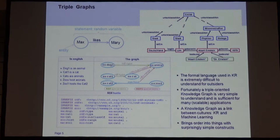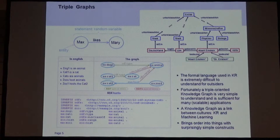A knowledge graph is very simple. An entity is a node — Max and Mary are nodes — and 'likes' is a predicate, a directed link. You should think of a whole statement as being a random variable, maybe a node in a Bayesian network. These two things are in a way dual. On the right side you see a simple example: Albert Einstein is born in 1879, born in Ulm, Ulm is in Germany, Germany is a state, Albert Einstein is a physicist, a physicist is a researcher, and so on.